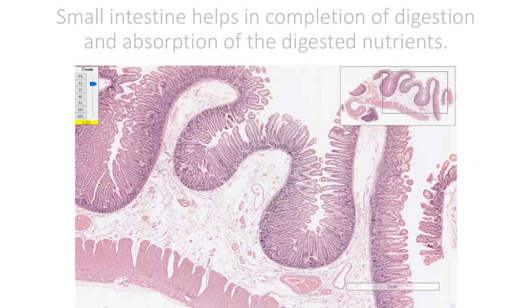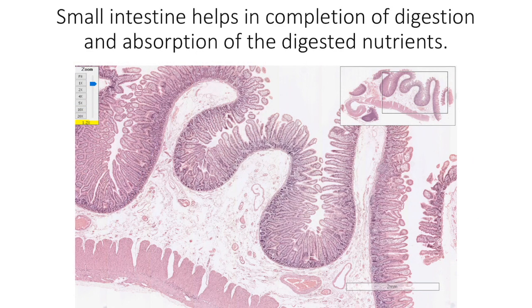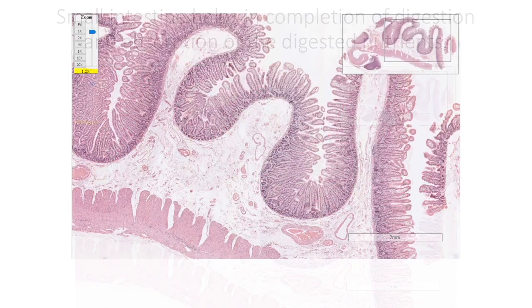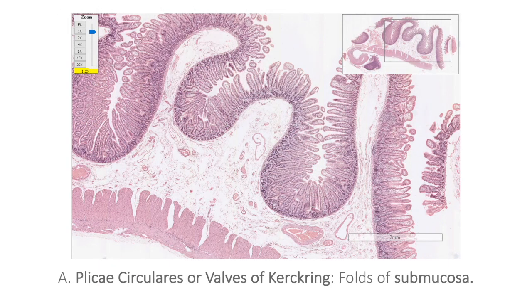Two main functions of the small intestine are completion of digestion and absorption of digested nutrients, water, and electrolytes. Both these functions are enhanced by increasing the contact time with food. This is best achieved by numerous surface projections at various levels which increase the surface area. The first level of folds are the plicae circulares, or valves of Kerkring.